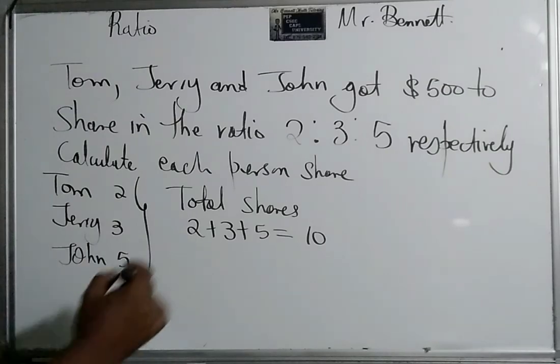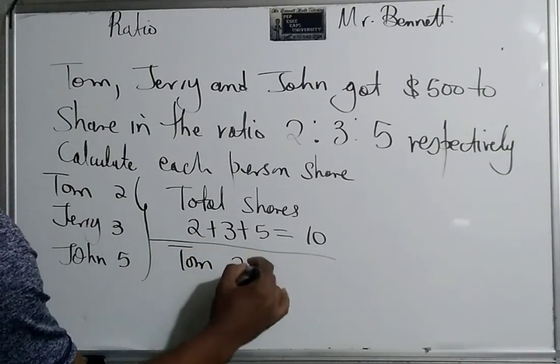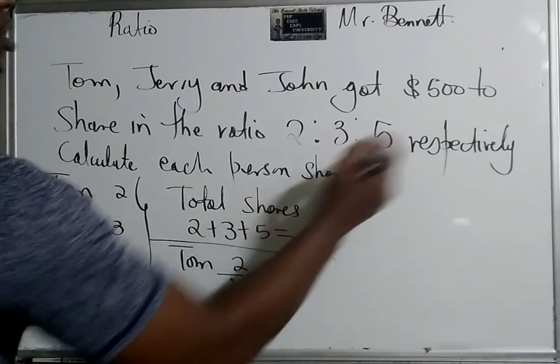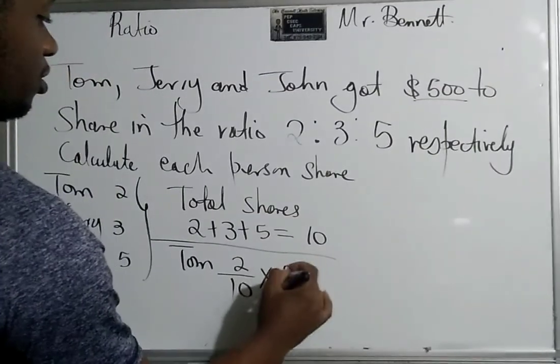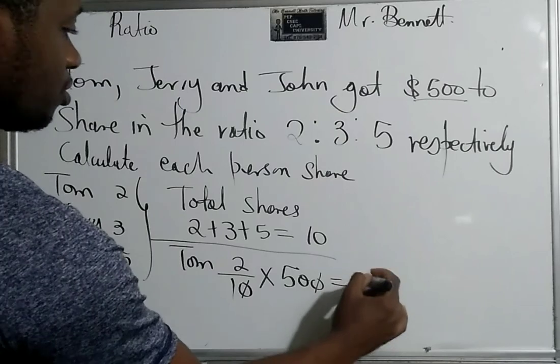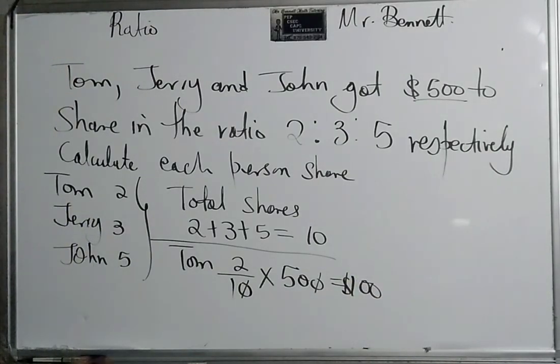But out of the 10, Tom's supposed to get 2, so it's 2 out of 10 times total money which is 500. So this cancels, so 5 times 2, so he gets one hundred dollars.